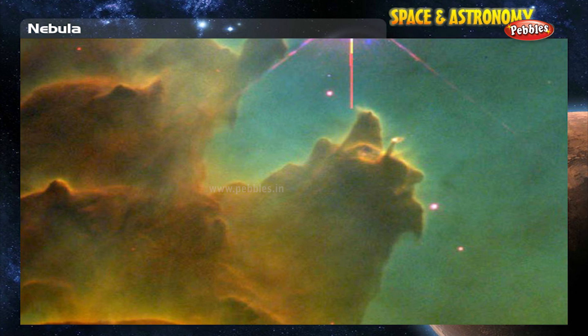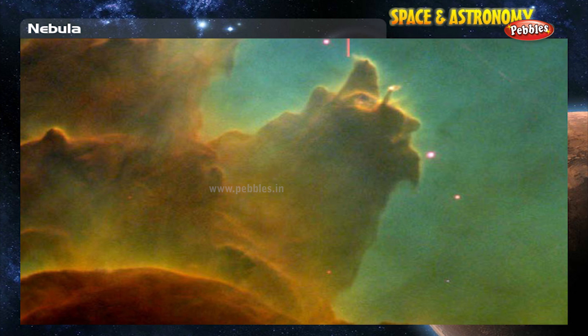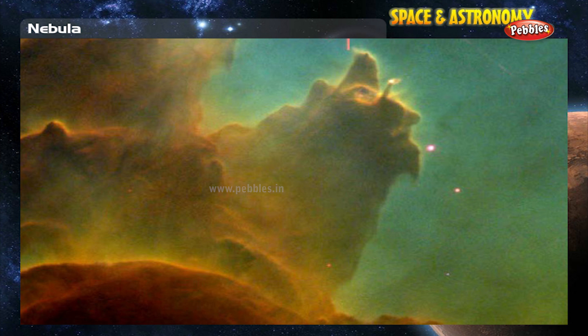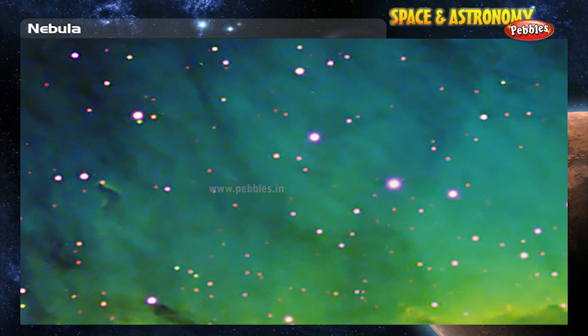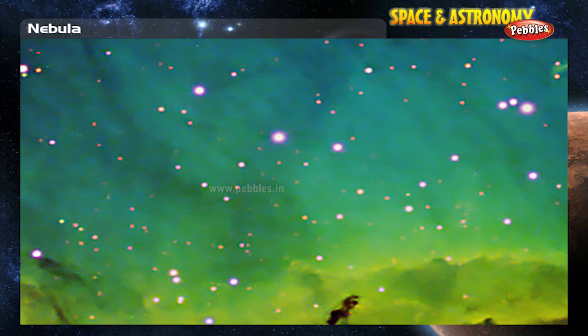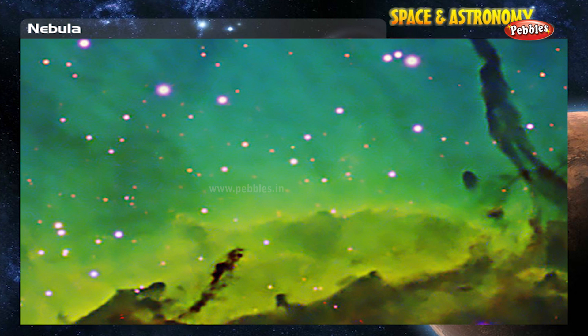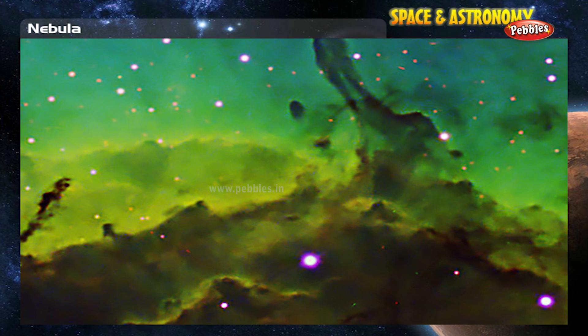The remaining materials are then believed to form planets and other planetary system objects. Many nebulae form from the gravitational collapse of gas in the interstellar medium or ISM.